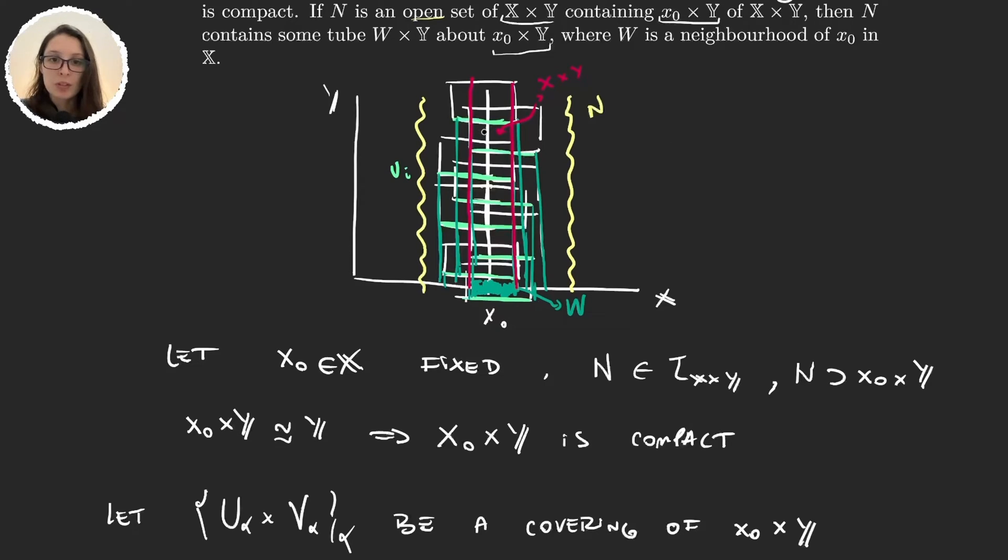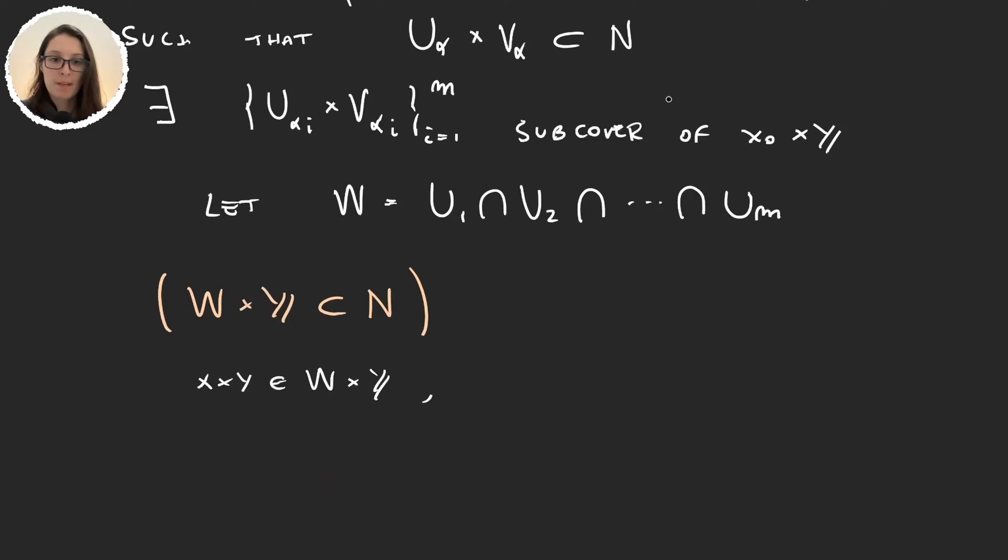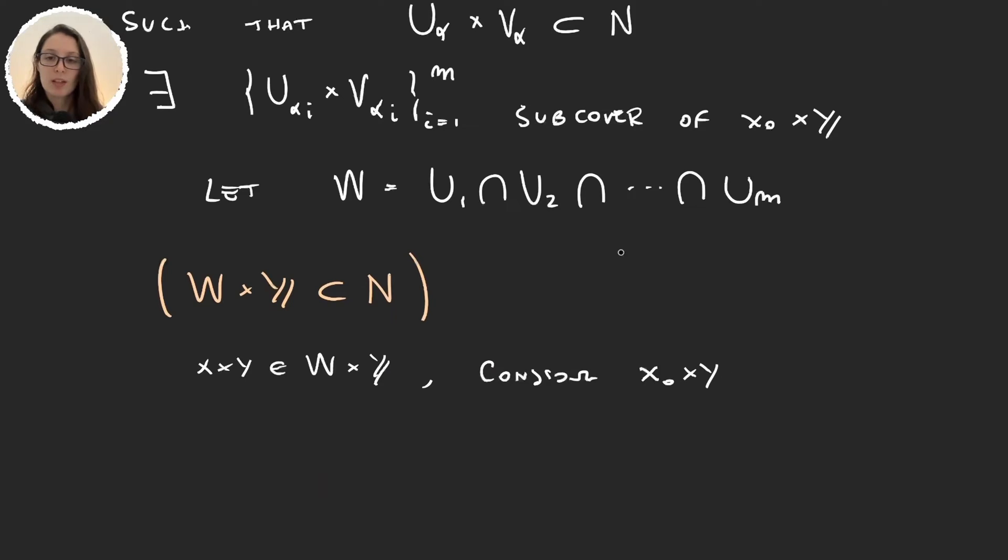x times y, and what I will do is consider this element here, with the same y coordinate, this will be x₀ times y. Well, x₀ times y was covered here by some of these elements,